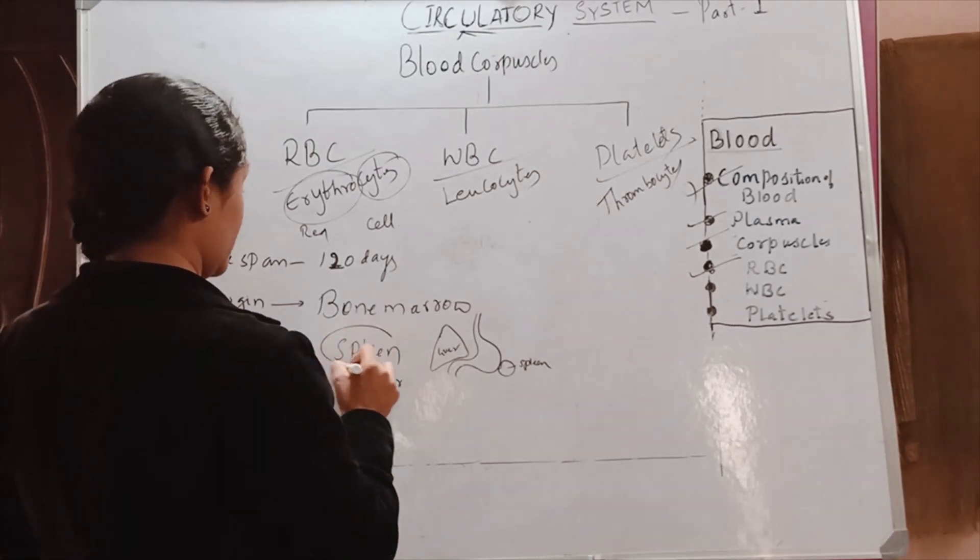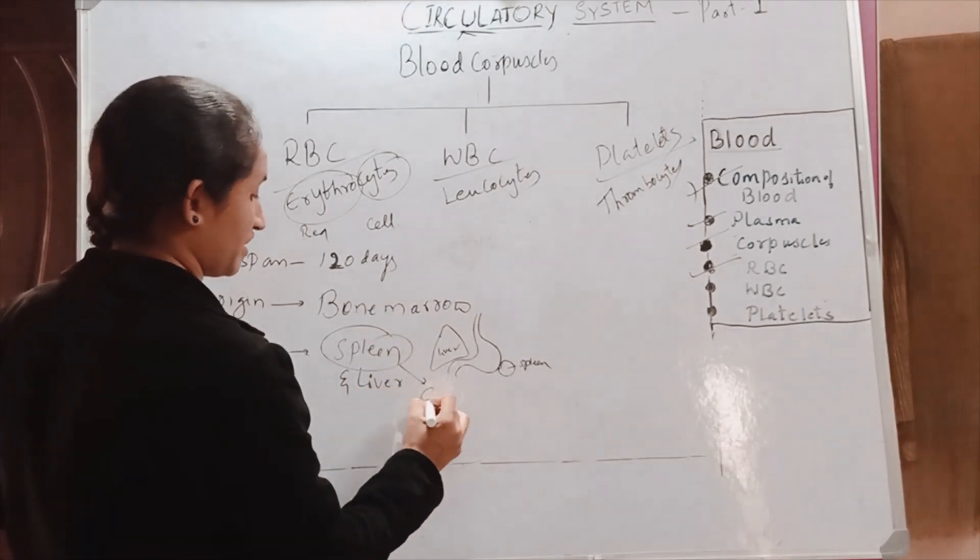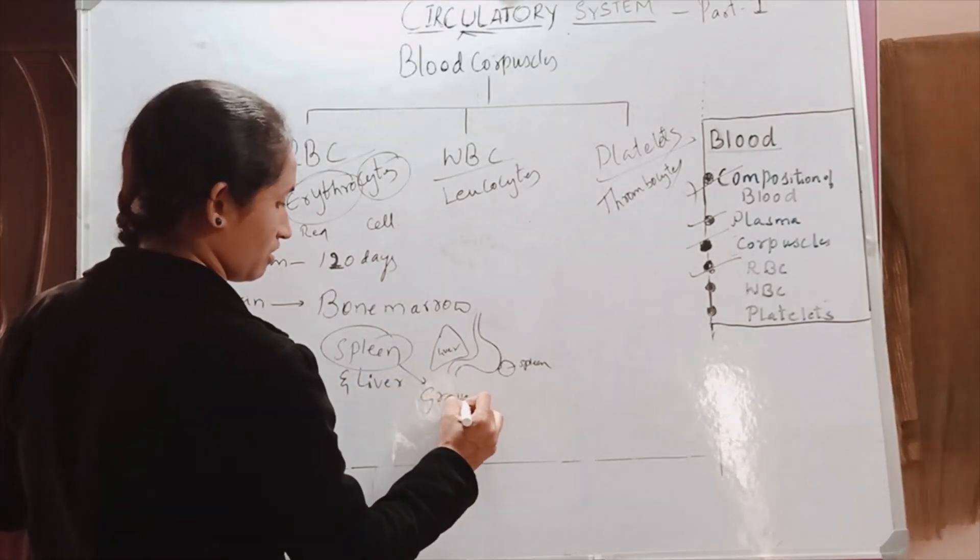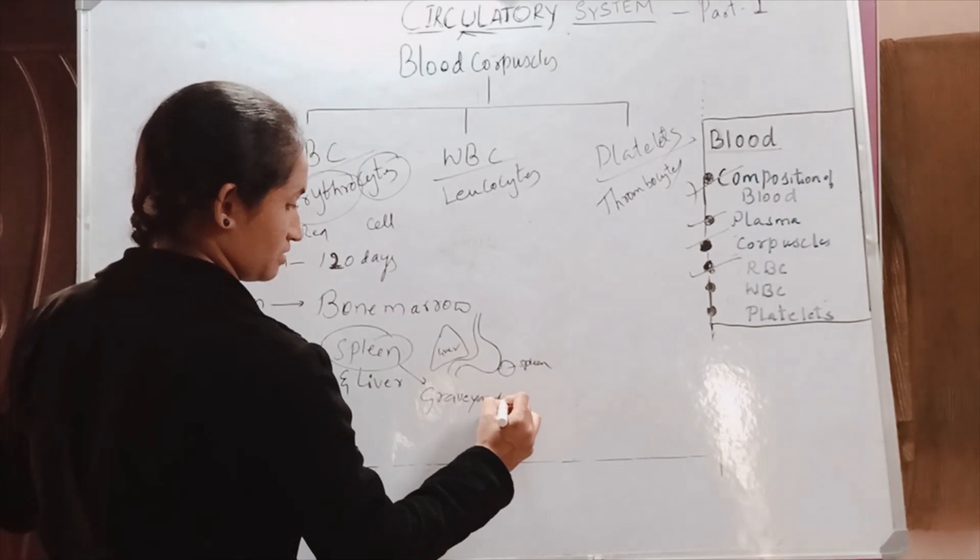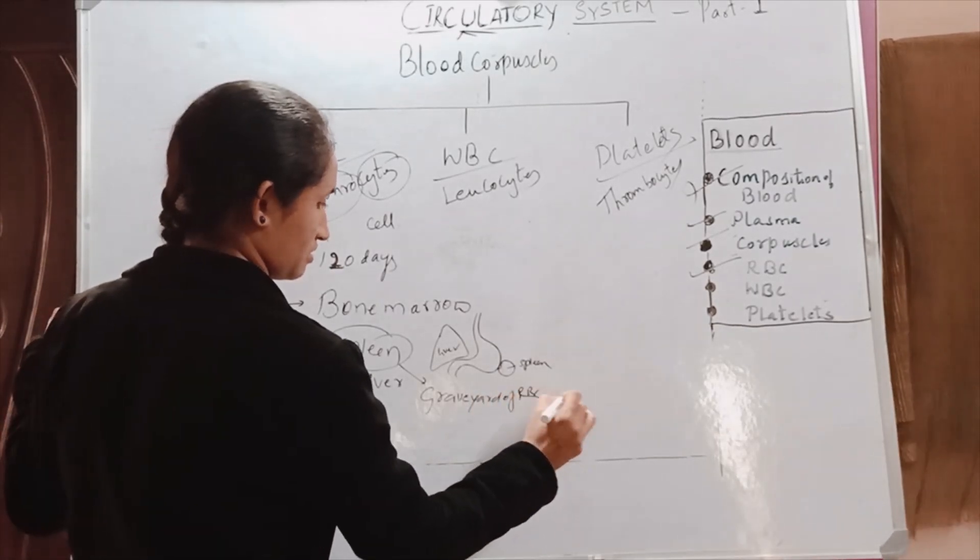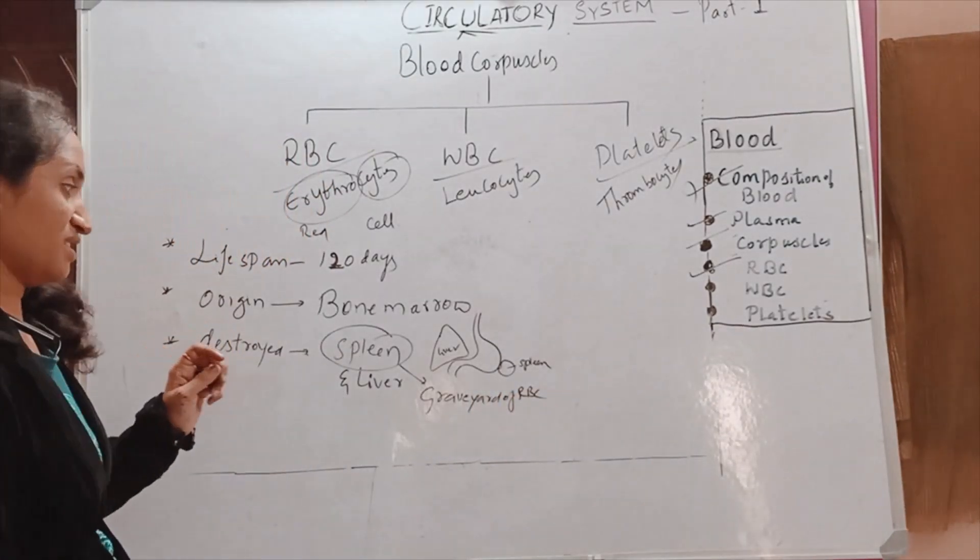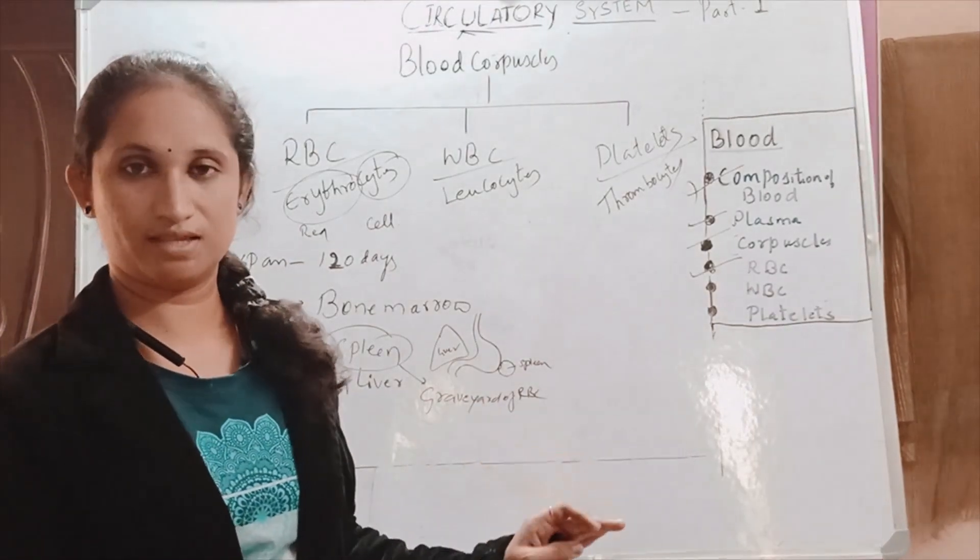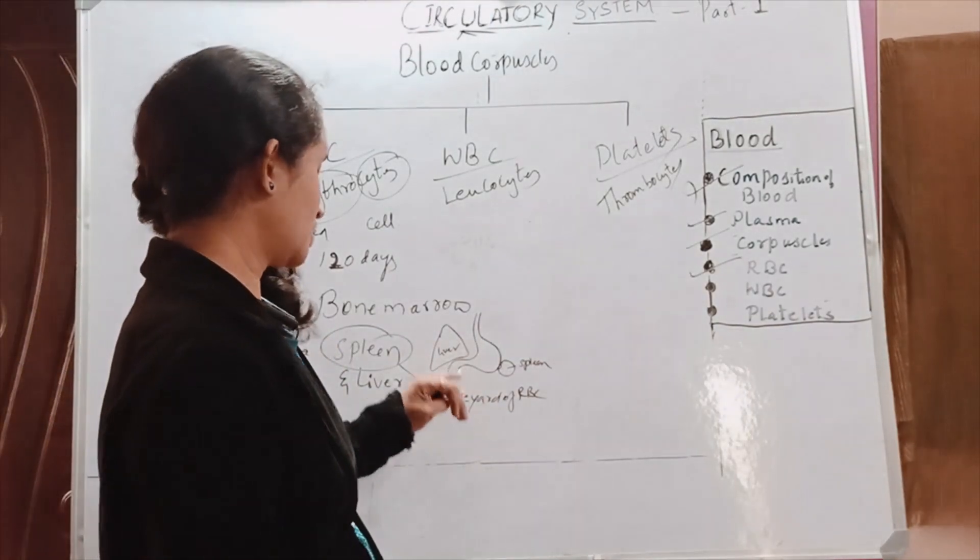Spleen is called as graveyard of RBC. It is the place, when a person goes to the death place it is in the graveyard, so RBCs majorly are destroyed in spleen.